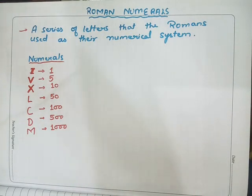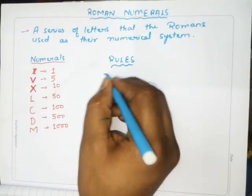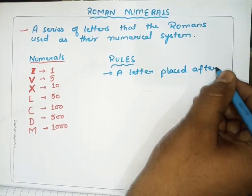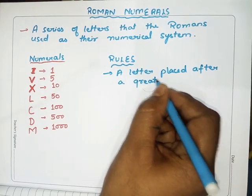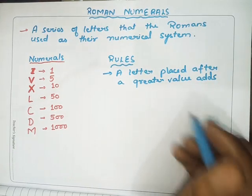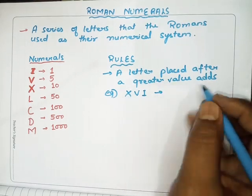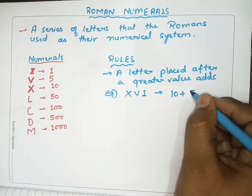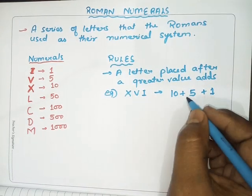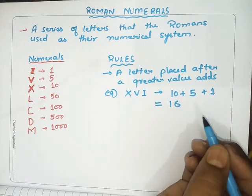There are two rules for writing Roman numerals. Rule 1: a letter placed after a greater value adds. For example, XVI — X is 10, V is 5, I is 1. They are in descending order, so all signs are positive: 10 + 5 + 1 = 16. So XVI represents 16.